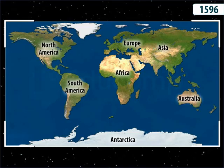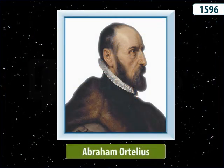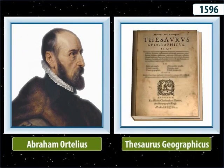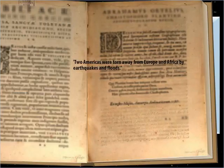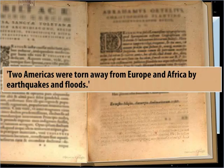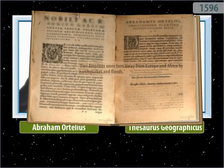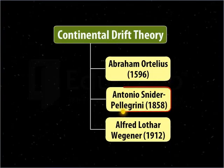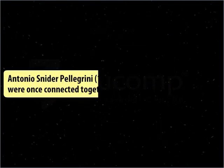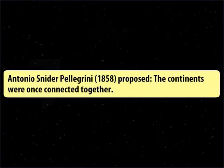The idea that continents were not always in their present positions was first put forth as early as 1596 by a Dutch mapmaker, Abraham Ortelius. In his work named Thesaurus Geographicus, Ortelius proposed that the two Americas were torn away from Europe and Africa by earthquakes and floods.